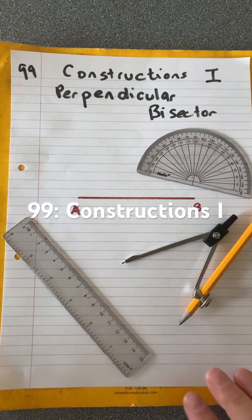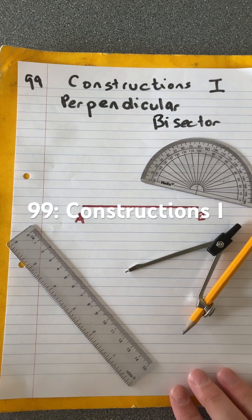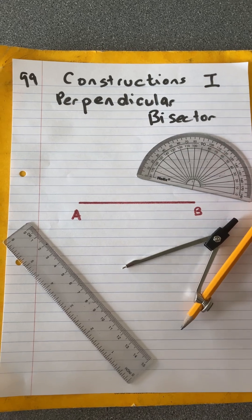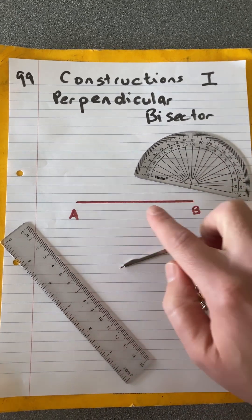Hello and welcome to Martin Maths doing topic 99, Constructions Part 1. We're going to make a perpendicular bisector. So we're going to make the perpendicular bisector of the line AB.